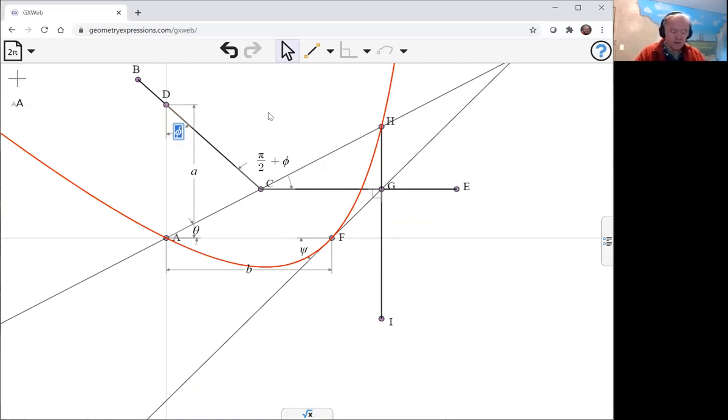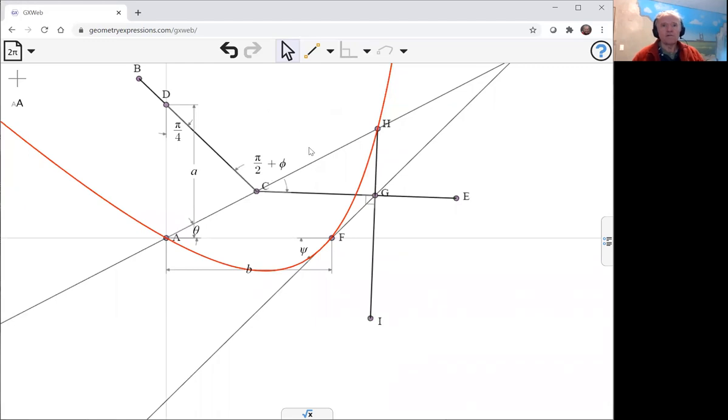So let's say phi was actually going to be pi by four, to change it here as well.